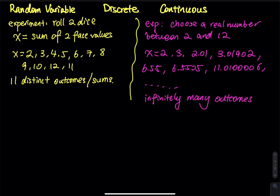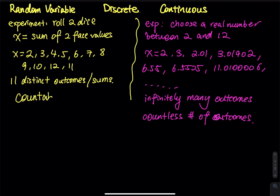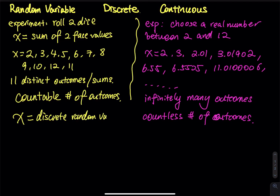Another word to describe infinitely many outcomes is countless number of outcomes. On the other side, the two-dice problem has a countable number of outcomes — countable is the opposite of countless. So therefore, x for the two-dice problem is called a discrete random variable, while x for the real-number experiment is called a continuous random variable.